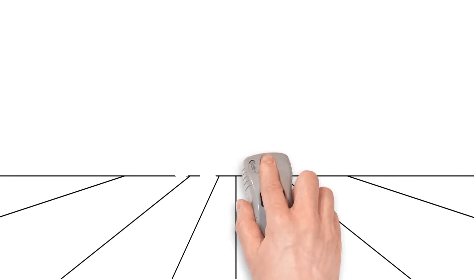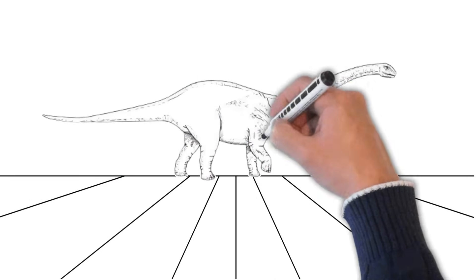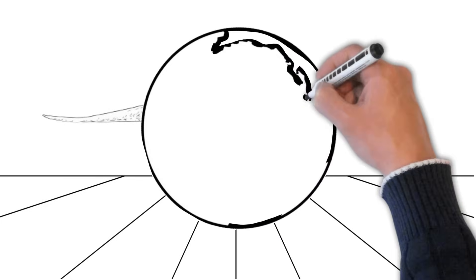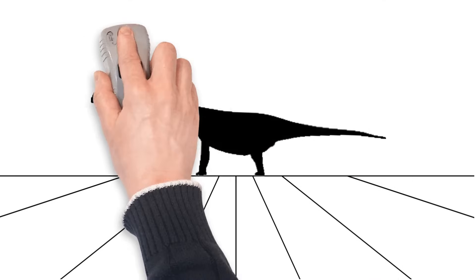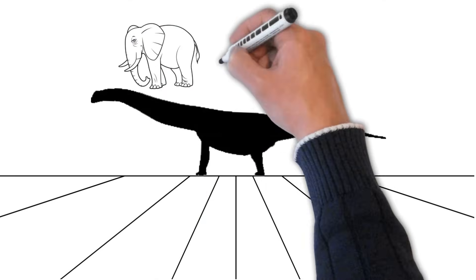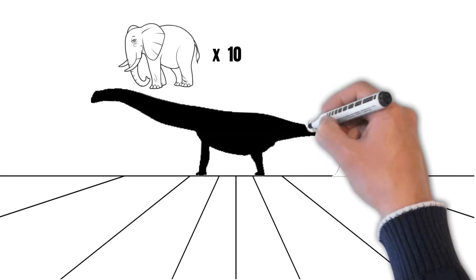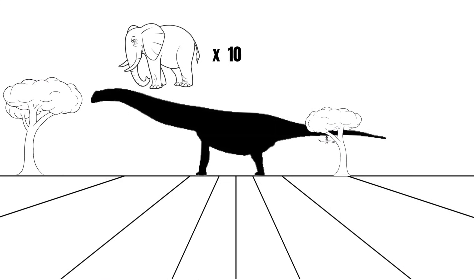Next, we meet Argentinosaurus, a true titan of the ancient world. Argentinosaurus was a massive herbivorous sauropod that lived around 95 million years ago. It was one of the largest land animals to have ever lived, stretching up to 100 feet long and weighing as much as 10 elephants. This gentle giant used its long neck to reach high into the treetops, munching on leaves as it slowly moved across the gigantic plains of South America.